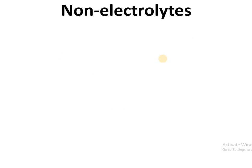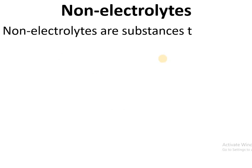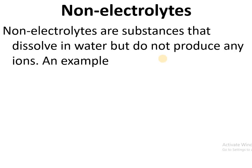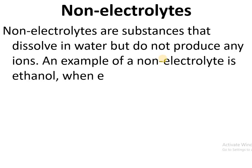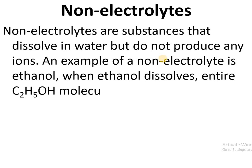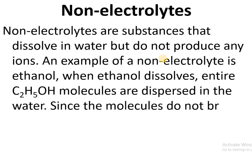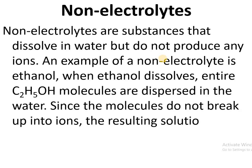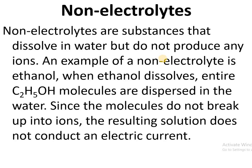Non-electrolytes are substances that dissolve in water but do not produce any ions. An example of a non-electrolyte is ethanol. When ethanol dissolves, entire ethanol molecules are dispersed in the water. Since the molecules do not break up into ions, the resulting solution does not conduct an electric current.